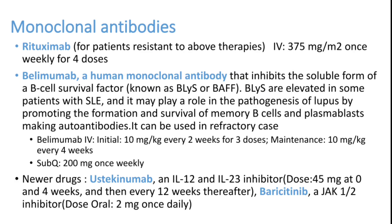Monoclonal antibodies can be used in SLE exacerbation or follow-up. Rituximab is the most commonly used drug — IV 375 mg per meter squared once weekly for four doses, used alone or with steroids. Belimumab, a human monoclonal antibody, is given IV at 10 mg per kg body weight every two weeks for three doses. Ustekinumab, an IL-12 and IL-23 inhibitor, is dosed at 45 mg at weeks 0 and 4, then every 12 weeks thereafter.